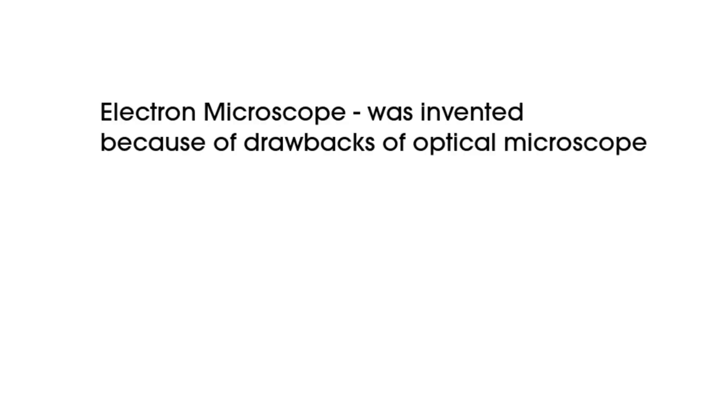The electron microscope was invented because of the drawbacks of light microscope. One of the major drawbacks of light microscope is the phenomenon of diffraction limitation. Let's try to understand what is an image formed by the microscope and how it is affected by the phenomenon of diffraction. If you understand this, it will be very easy to understand the working of an electron microscope.